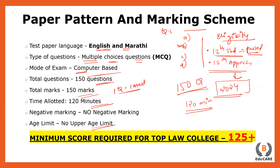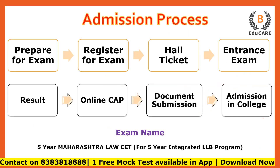If you want to get into the top law colleges — that is GLC, ILS, Praveen Gandhi — then your target score should be 125+, because the competition is very tough.